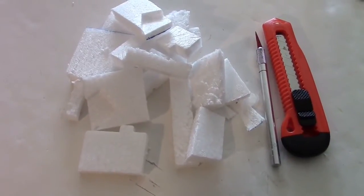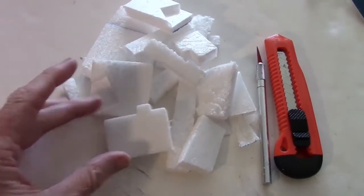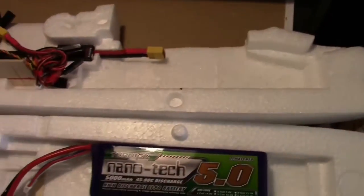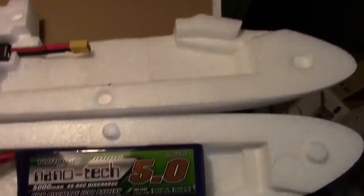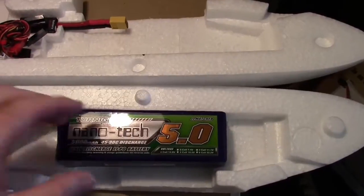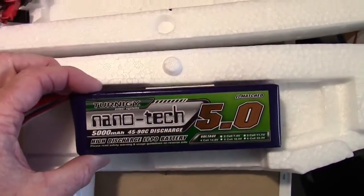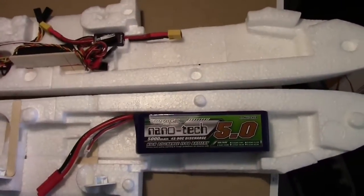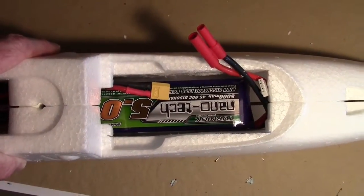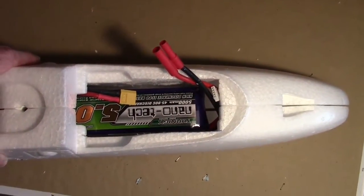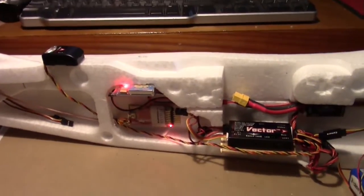And the final thing I did was cut all of this foam out of the nose section so this well is bigger right in here, wider actually, so I can fit up to a 5000 4 cell battery which looks something like this. So that's my layout so far.